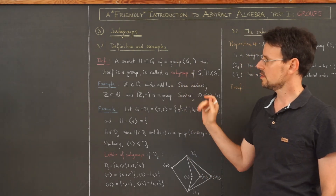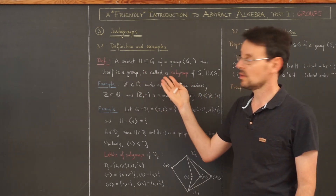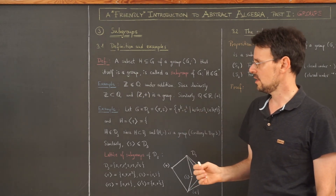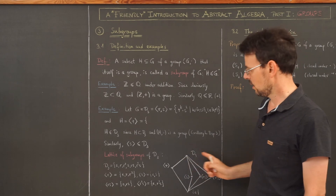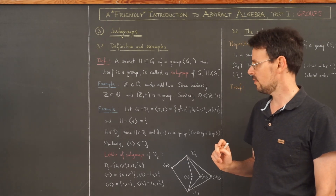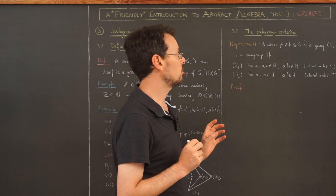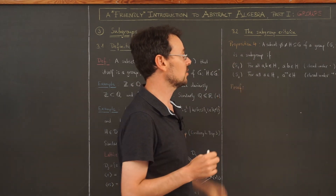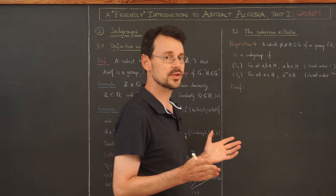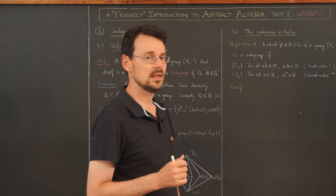Before we go into the details, as always, a quick overview of this video. First of all we are going to define what we mean by a subgroup. Then there will be some easy examples for subgroups, including a graphic depiction of the subgroups of the dihedral group of the equilateral triangle. Then we are going to prove a subgroup criterion — how one can check that one actually has a subgroup. In the end we look at the so-called torsion subgroup of an abelian group and show that it is indeed a subgroup.